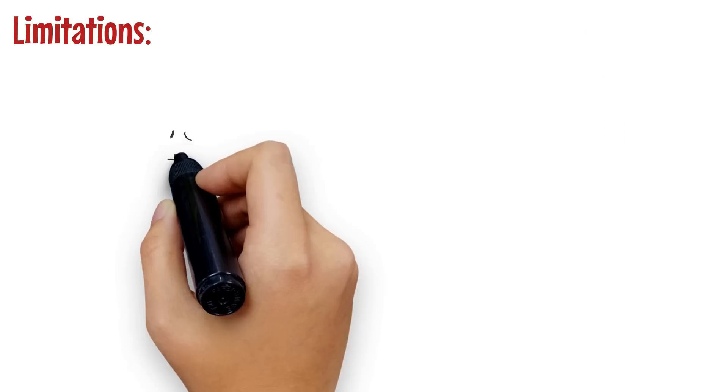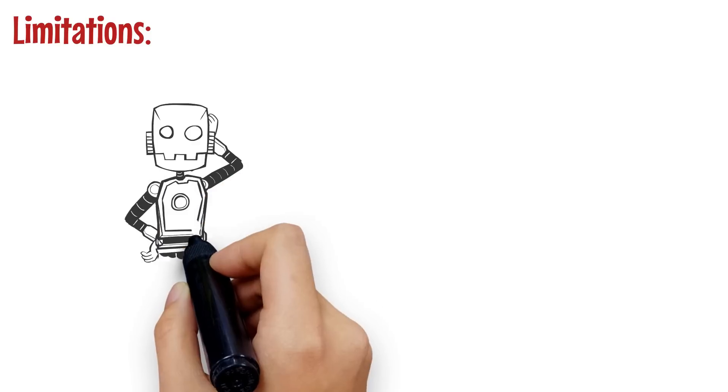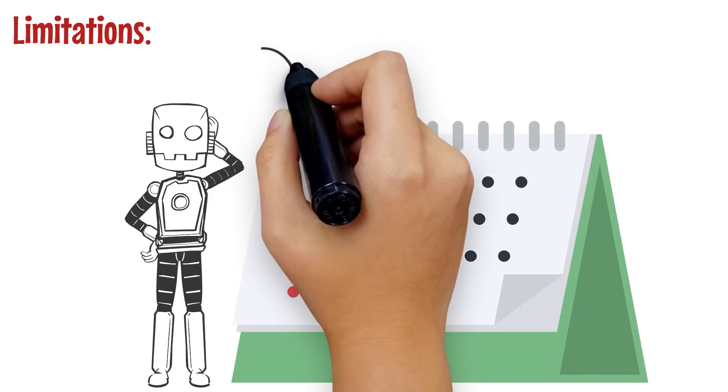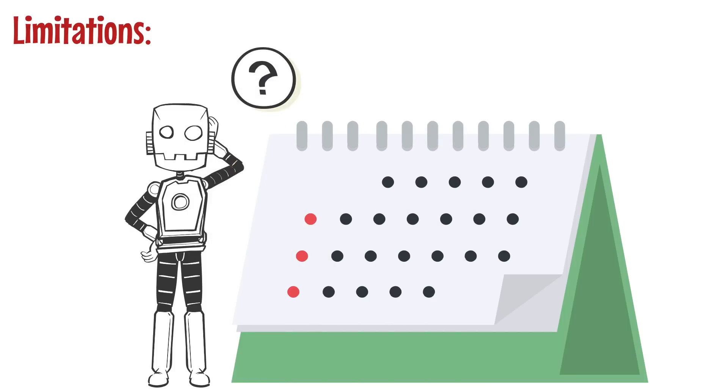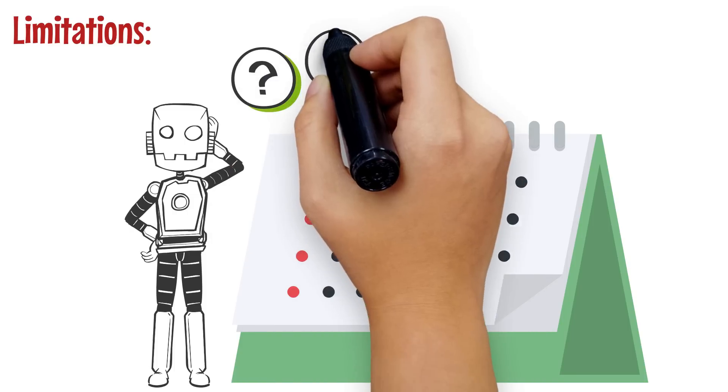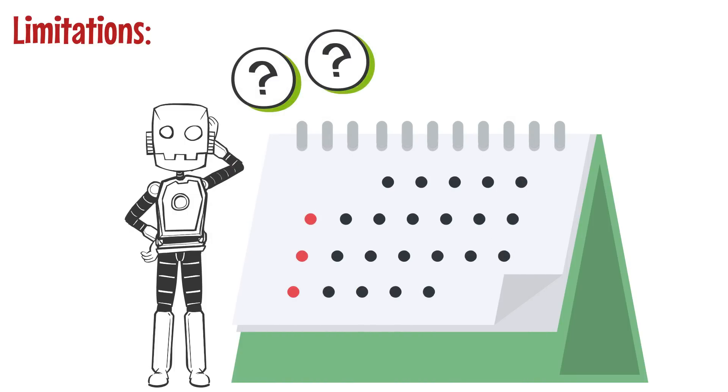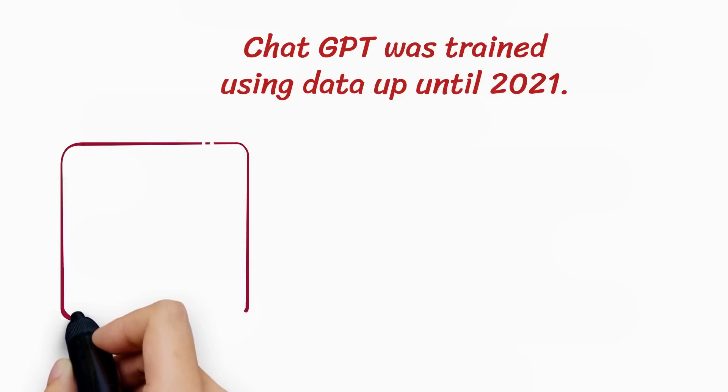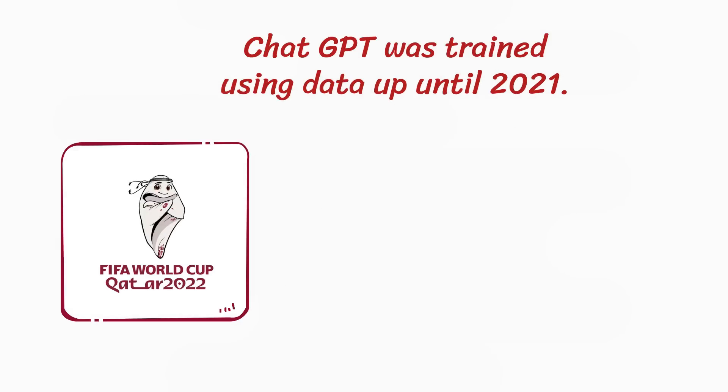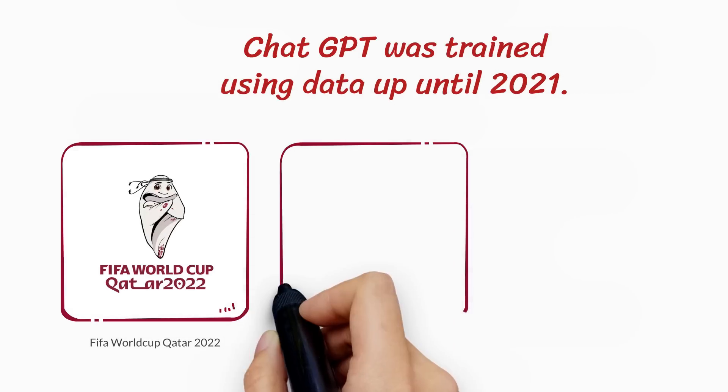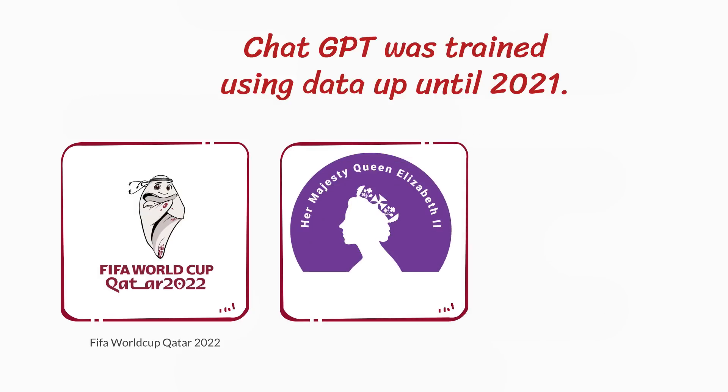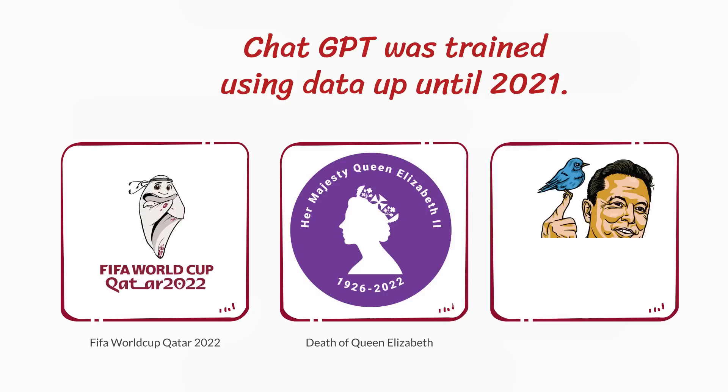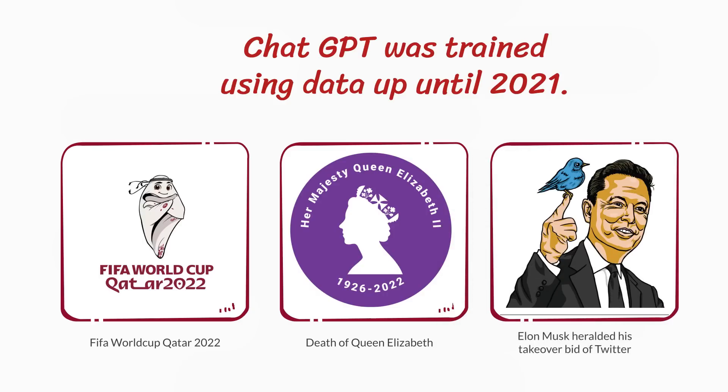Limitations. ChatGPT, like any artificial intelligence model, has certain limitations that need to be taken into consideration when using it. One of the most significant limitations of ChatGPT is its knowledge cutoff date. ChatGPT was trained using data up until 2021, which means that it does not have information about events or developments that have occurred after that time. This can result in inaccurate or outdated responses when ChatGPT is asked about recent events.